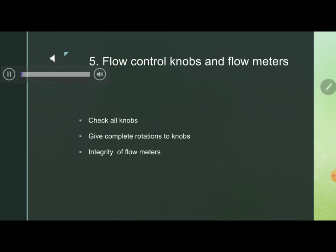Next, check the integrity of flow control knobs and flowmeters. It is important to check all the knobs by giving a complete rotation to each one — do not miss any. Check the response on the flowmeters: this gives information about the integrity of the bobbins — whether they are floating or stuck at any position. Whether fresh gas flow is low or high, the bobbins should always float in an increasing or decreasing manner and should never be stuck at any point.